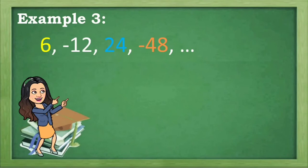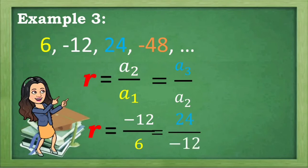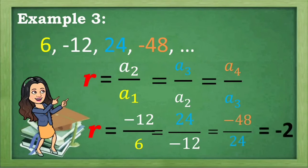Another example: 6, negative 12, 24, negative 48, and so on. What is the common ratio R? Using A sub 2 divided by A sub 1: negative 12 divided by 6 is equal to negative 2. Let's check: A sub 3 divided by A sub 2 — 24 divided by negative 12 is equal to negative 2. And A sub 4 divided by A sub 3 — negative 48 divided by 24 is also equal to negative 2. Therefore, that is a geometric sequence whose common ratio R is equal to negative 2.